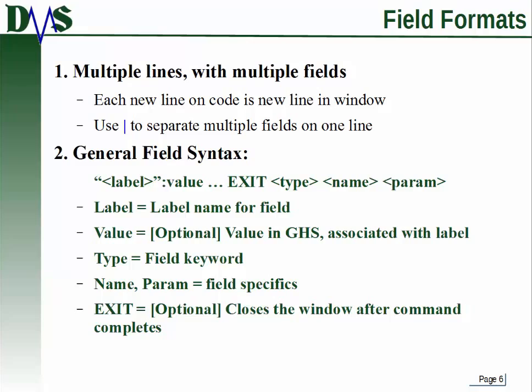Here's the syntax for a field definition. You start off with a label — whatever name will show up in the field. You can also use a colon and add a value. The label is the publicly visible text, and the value is the internal result that goes into GHS when the user picks that label — it might be something completely different. Type specifies the type of field. Name and parameter are field-specific options — we'll get into those later.